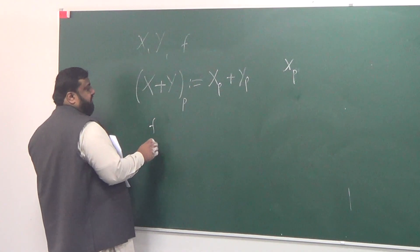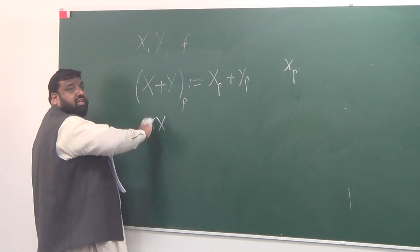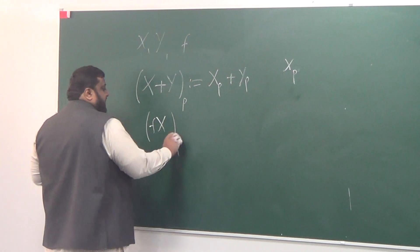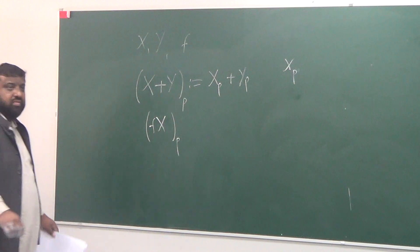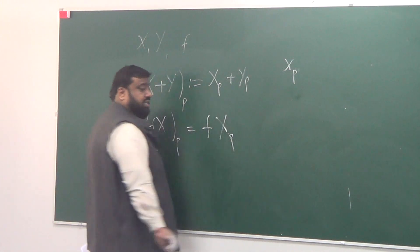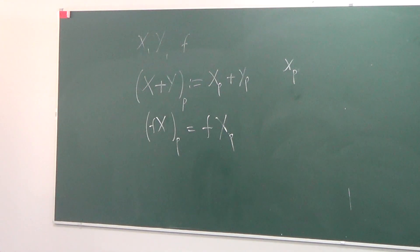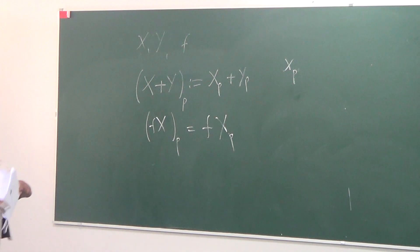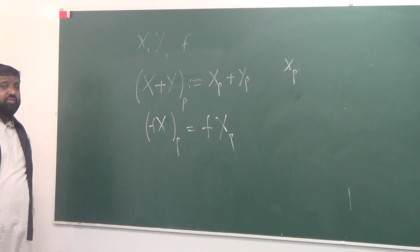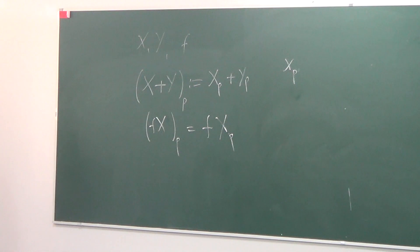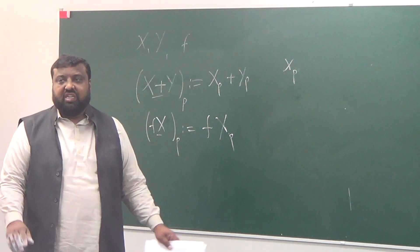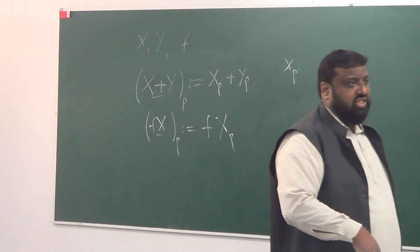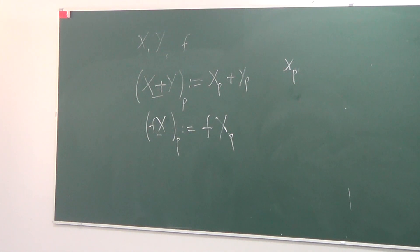And what about F times X — some scalar multiplied with a vector field — and I want to see it at the point P? F is some scalar function. We can show that indeed these two are vector fields as well. So if we have a set of vector fields, it's closed under addition and scalar multiplication — and we can show that it will be a vector space as well.